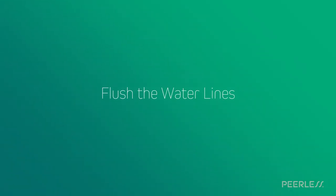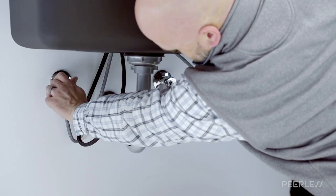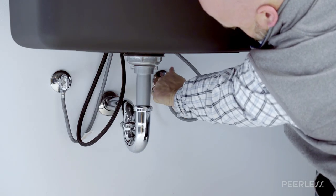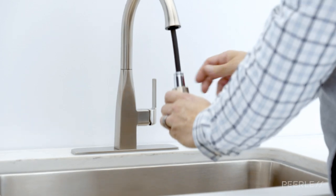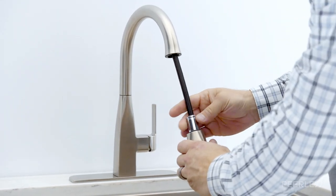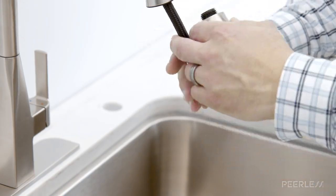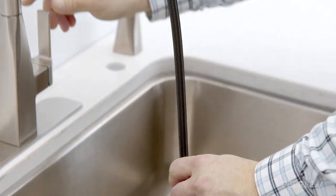Now flush the water lines. Turn on the hot and cold water supplies. Then remove the sprayer assembly and pull the hose assembly out of the spout, holding the end of the hose down into the sink.